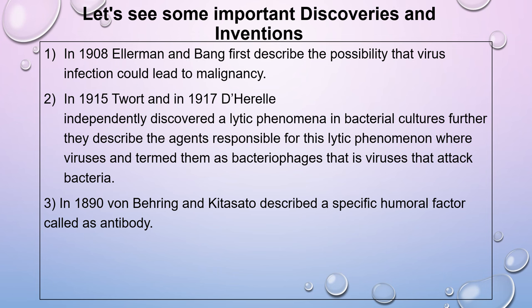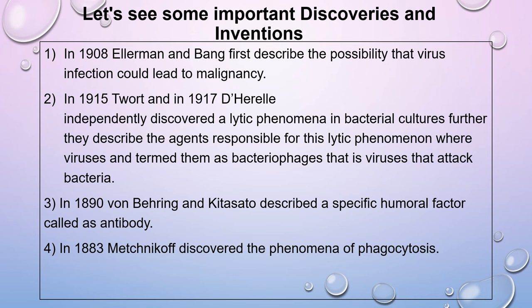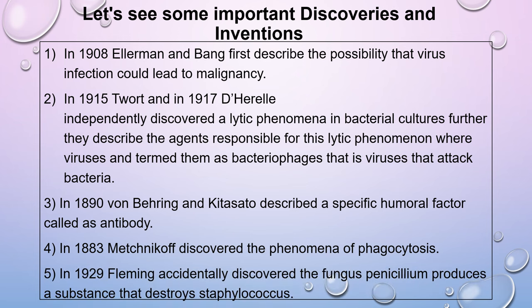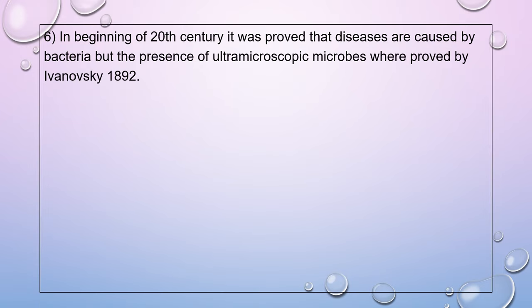In 1890, Von Behring and Kitasato Sato described a specific humoral factor called an antibody. In 1883, Metchnikoff discovered the phenomenon of phagocytosis. In 1929, Fleming accidentally discovered the fungus Penicillium, which produces a substance that destroys Staphylococcus. In the beginning of the 20th century, it was proved that diseases are caused by bacteria, but the presence of ultramicroscopic microbes was proved by Ivanovsky in 1892.